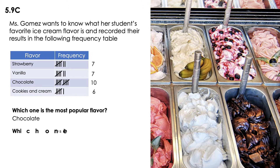The next question is: which one is the least popular — the one that they didn't like, so you cannot buy that one for them. It's cookies and cream, because it's just six.